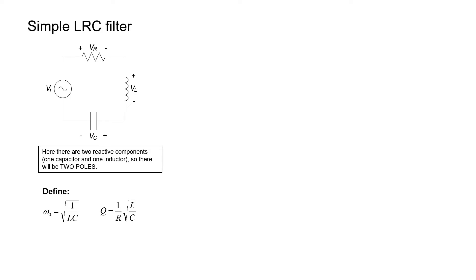In this video we're going to look at the quality factor in passive filters. Let's first look at a simple LRC series circuit. We've analyzed this circuit in a previous video and in that video we determined that this was a two-pole filter, and we merely defined two parameters, omega-0 and Q, and I called Q the quality factor. In this video I'm going to describe why this is the quality factor and what physical significance it has in terms of the filter's performance.